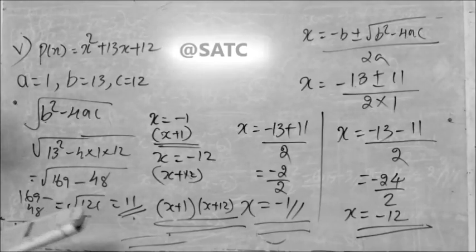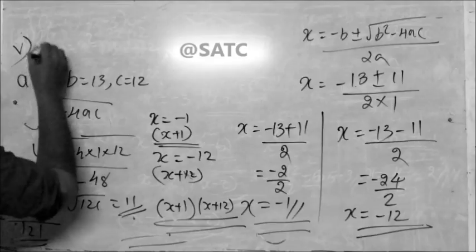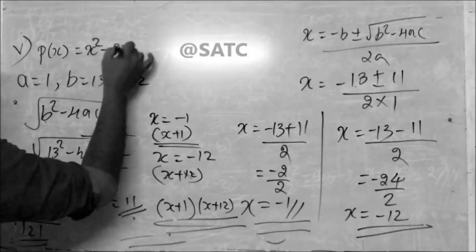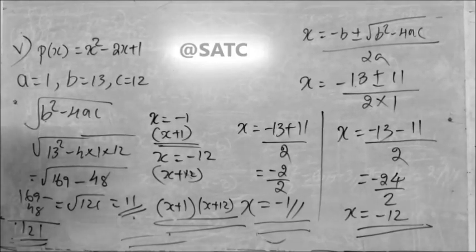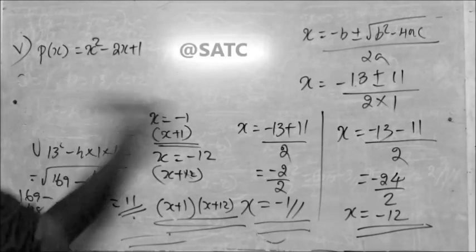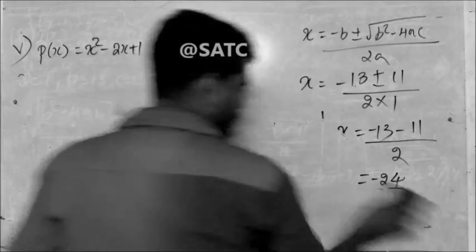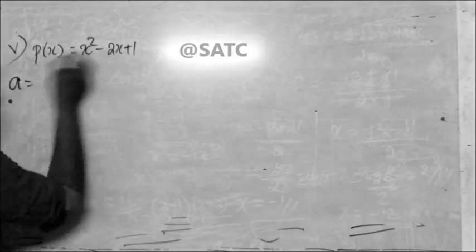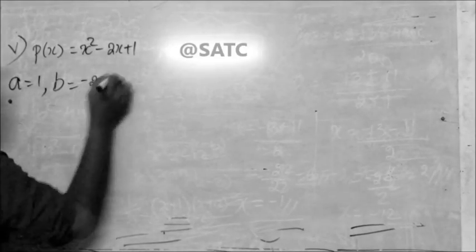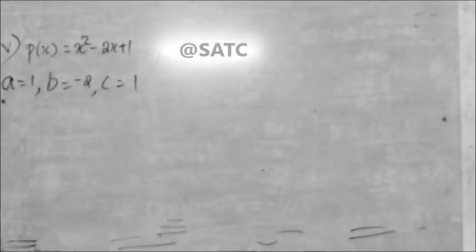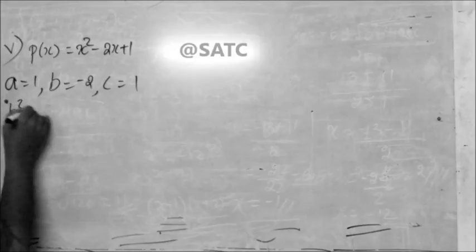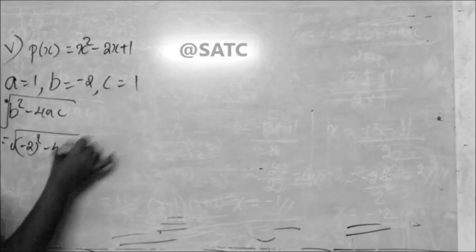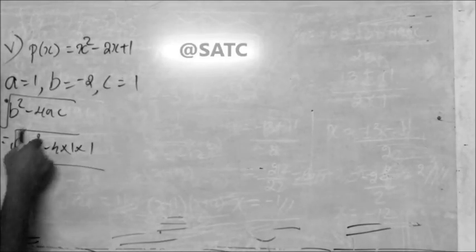Course number 5. Y is going to be x squared minus... Similarly, same problem here. A squared 1, b squared minus 2, c squared minus 2. Then what is b squared minus 4? C is the root of — what is b? Minus 2. What is c?